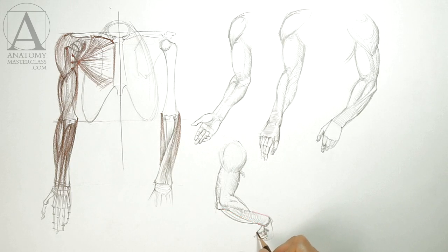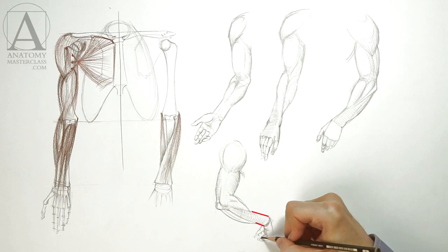The width of the arm at the wrist is defined by the size of the ulna and radius bones.